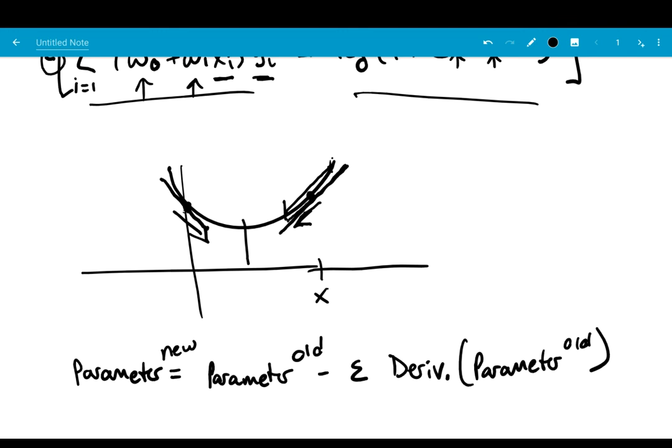And then when you have a multivariate parameter, this derivative gets turned into what is called a gradient, which is just a collection of what they call partial derivatives, but it still works effectively in the same way. So that is the algorithm.